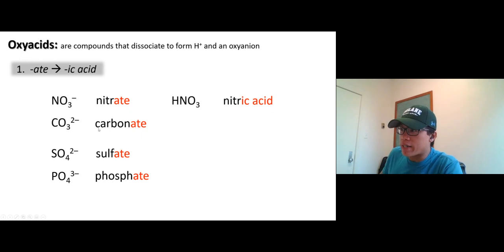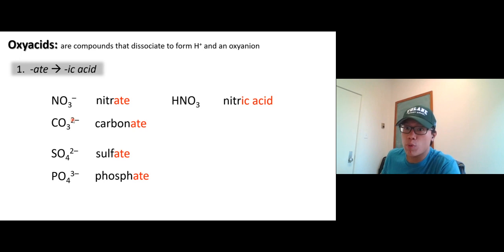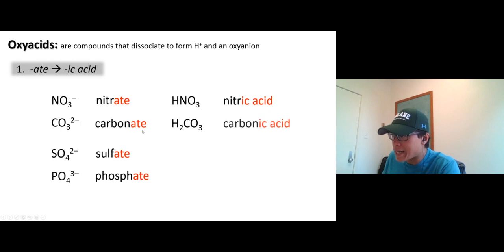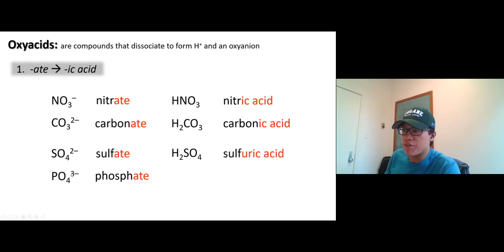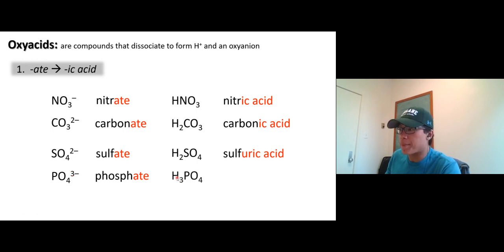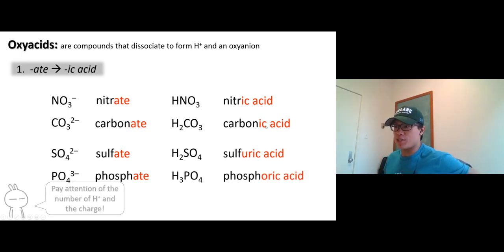Carbonate has a charge of -2, so the maximum number of protons it can accept is two. When it becomes an acid, we call it carbonic acid. Sulfate is also 2-, so you can add up to two protons — that gives us sulfuric acid. Phosphate is 3-, so you can add up to three protons, and when all three are added it becomes phosphoric acid.